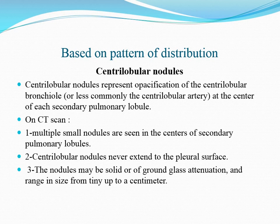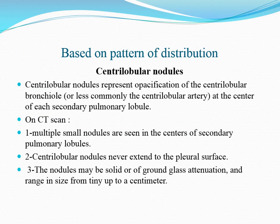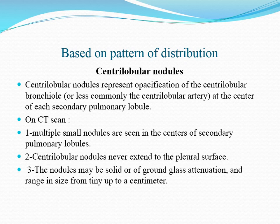Starting with multiple pulmonary nodules, based on the pattern of distribution they can be classified into centrilobular nodules, perilymphatic nodules, and randomly distributed nodules with a tree-in-bud pattern. Centrilobular nodules represent opacification of the centrilobular bronchiole or less commonly the centrilobular artery at the center of each secondary pulmonary lobule. On CT scan, multiple small nodules are seen in the center of the secondary pulmonary lobules and never extend to the pulmonary surface. The nodules may be solid or of ground-glass attenuation and range in size from tiny up to a centimeter.